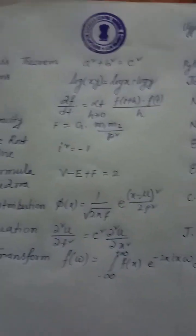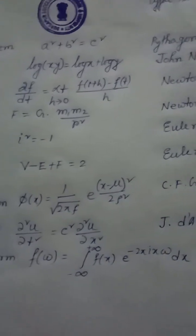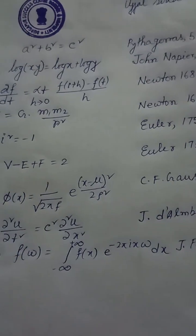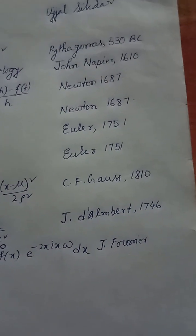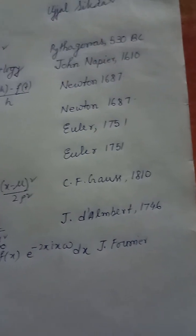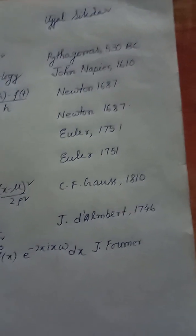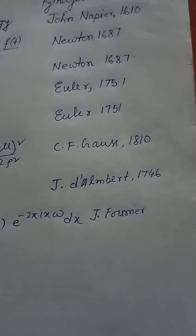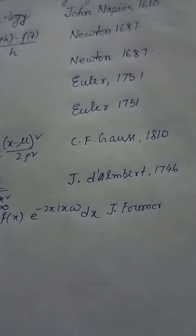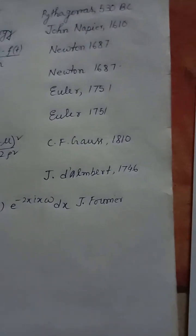Equation 9: Fourier transform — f̂(W) = ∫ from −∞ to +∞ f(x) · e^(−2πi·x·W) dx, Jean-Baptiste Joseph Fourier, 1822.